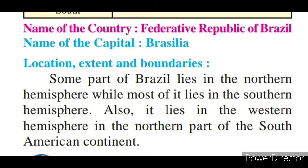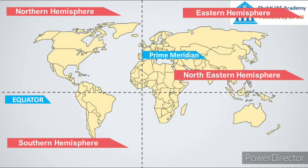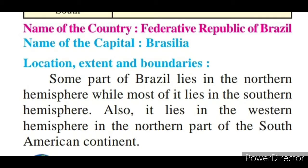Next we will understand the location and extent of Brazil. The official name of the country is the Federative Republic of Brazil, and the capital of Brazil is Brasília. Brazil lies across the equator — the imaginary center line of the earth — so some part of Brazil is in the northern hemisphere while most of Brazil lies in the southern hemisphere. Compared to the prime meridian, Brazil is in the western hemisphere, in the northern part of the South American continent.